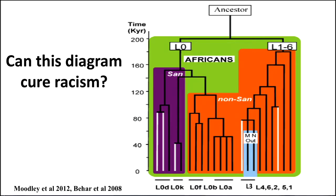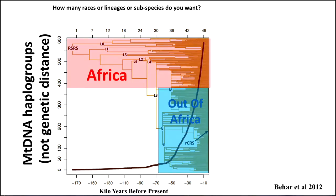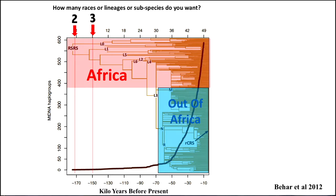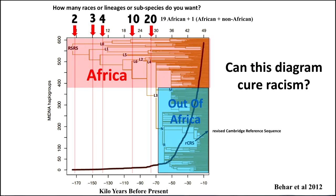Back to this diagram — can it cure racism? If you want to divide people into two groups, you draw a horizontal line on this phylogenetic tree, giving you the L0 group and the L1-through-6 group — two subspecies. If you want three groups, you cut the line here. Four great groups — you cut here. Nine — here. When you cut this diagram vertically to create 20 groups, 19 of those groups are African and one is a combination of African and non-African. So maybe this diagram can cure racism.